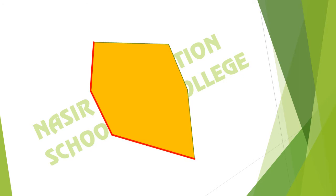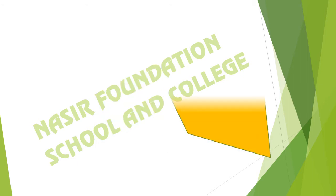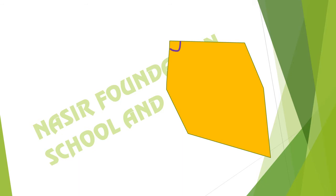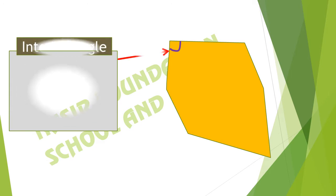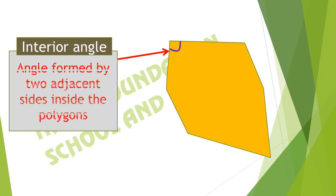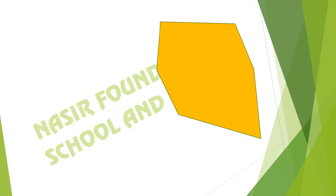Here we can see that this polygon has six sides — 1, 2, 3, 4, 5, and 6. Here we can also see that there is an angle between two lines. This is the interior angle because it is on the internal side of this polygon. The angle formed by two adjacent sides inside the polygon is called its interior angle.